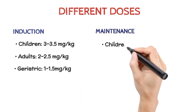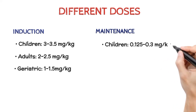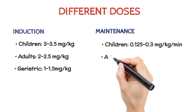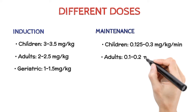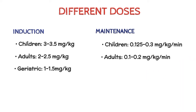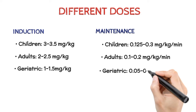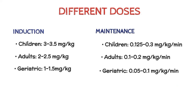Maintenance doses. Children: 0.125–0.3 mg per kg per minute. Adults: 0.1–0.2 mg per kg per minute. Geriatric patients: 0.05–0.1 mg per kg per minute.